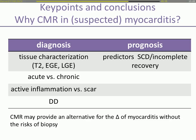To conclude, CMR is a valuable tool and may provide an alternative for the diagnosis of myocarditis without the risks of a myocardial biopsy. It offers diagnosis of acute and chronic myocarditis by tissue characterization using T2, early, and late gadolinium enhancement. It can differentiate between acute and chronic myocarditis and between active inflammation and scar. It also provides predictors and clues for prognosis, including sudden cardiac death and incomplete recovery. Thank you.